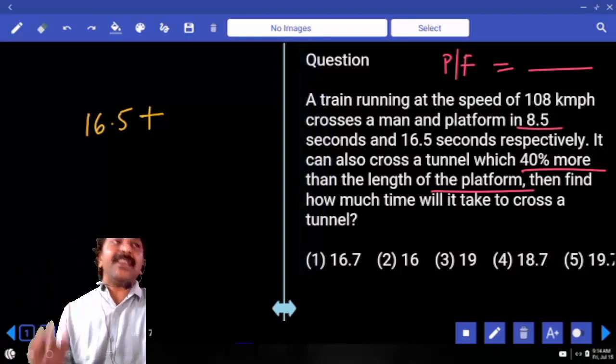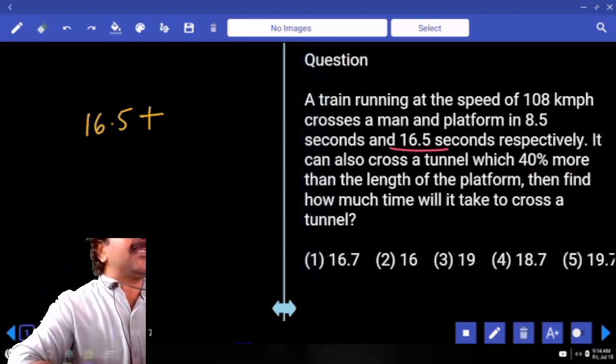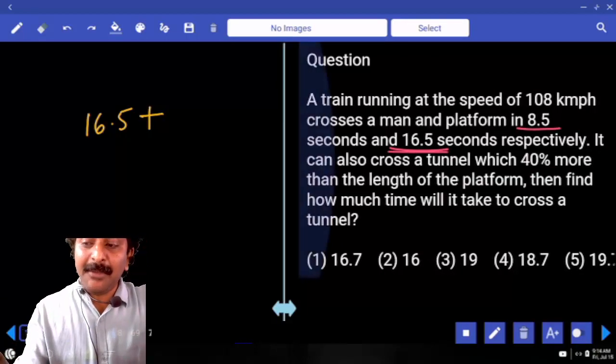It takes 8 and a half seconds to cross a man, and it takes 16.5 seconds to cross the platform. How much is the time difference that we have here?